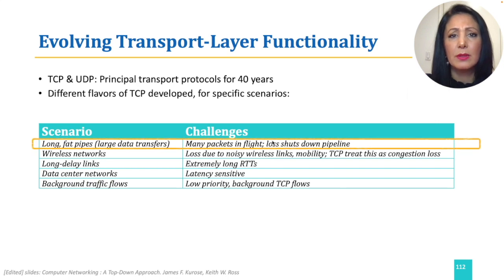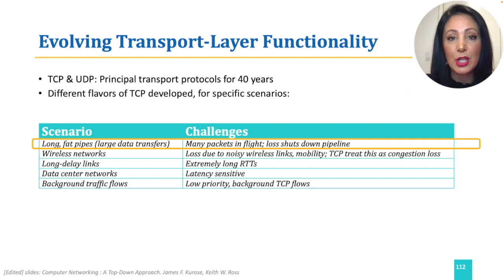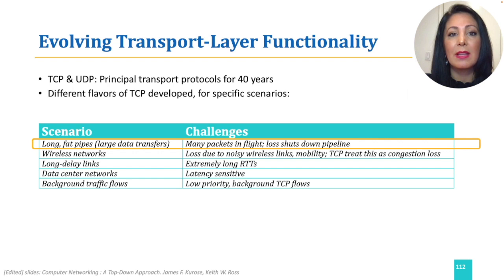For example, large data transfer using TCP on connections with high bandwidth means a TCP window can grow large to allow many packets in flight, with a single loss being able to considerably shrink that window and affect the communication drastically.